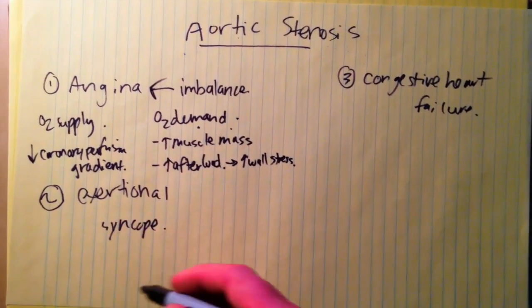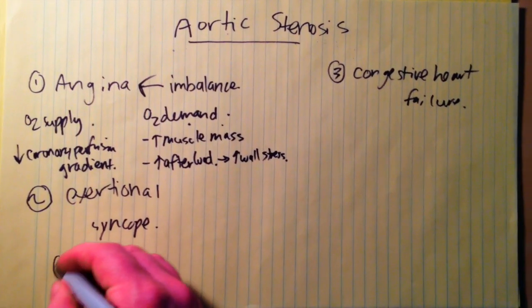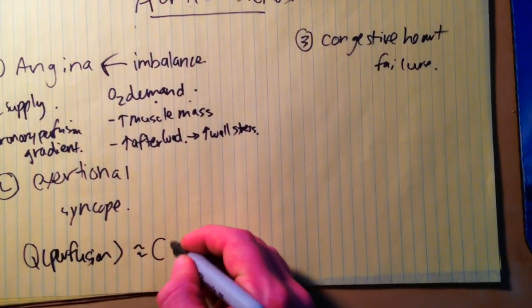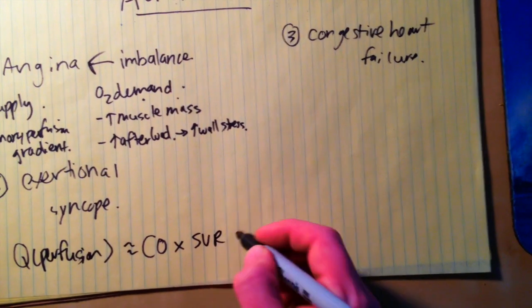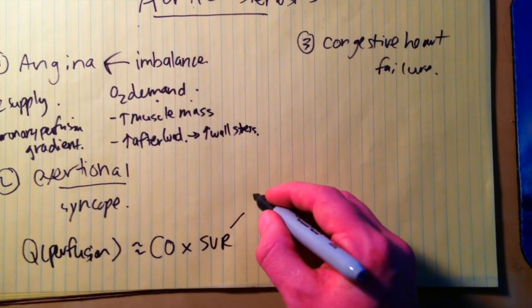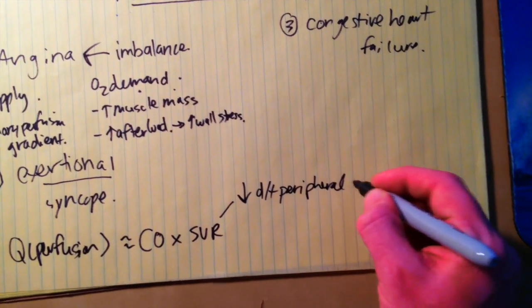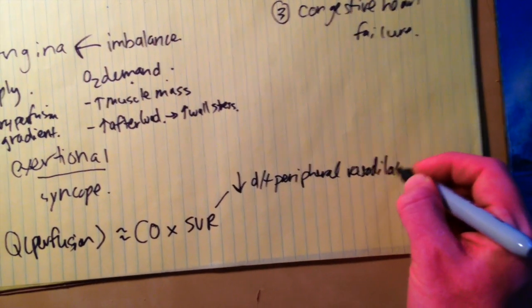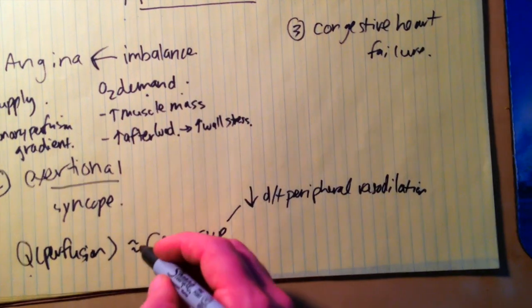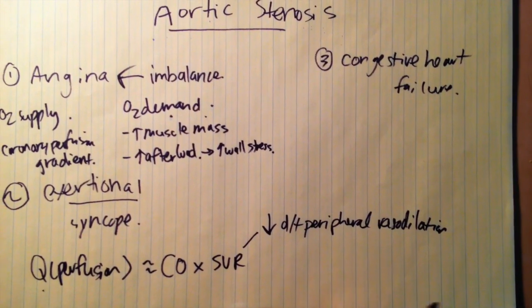From an exertional syncope point of view, we can go back to our basic equation for perfusion, knowing that it's directly proportional to cardiac output and systemic vascular resistance. When somebody is exerting themselves, systemic vascular resistance goes down due to peripheral vasodilation to get blood flow to the muscles. To maintain perfusion, you would expect cardiac output to increase — through increased contractility, increased stroke volume, and increased heart rate during exercise.